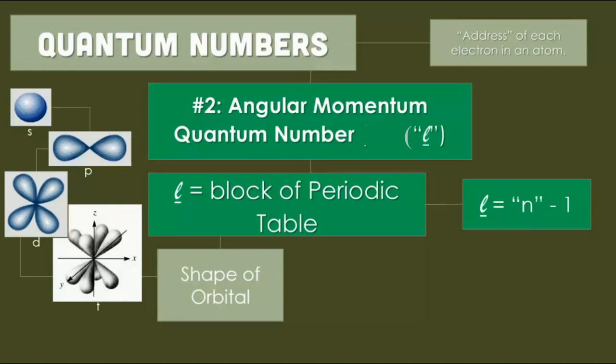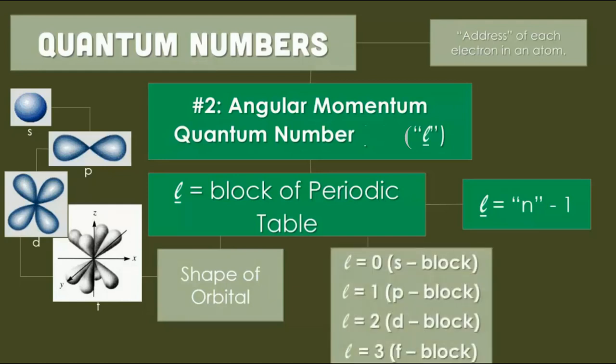L equal to 0 tells about s block. L equal to 1 is p block. L equal to 2 represents d block, and l equal to 3 represents f block. You remember that l equal to 0 means n equal to 1, therefore 1 minus 1 equals 0.